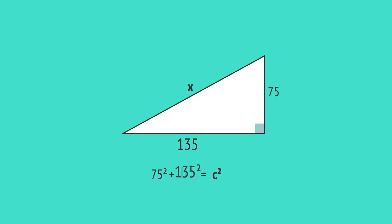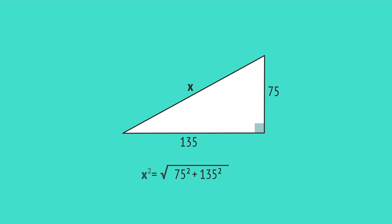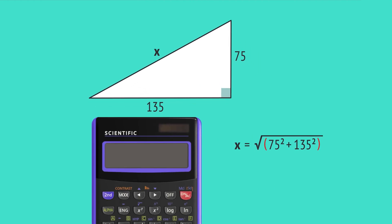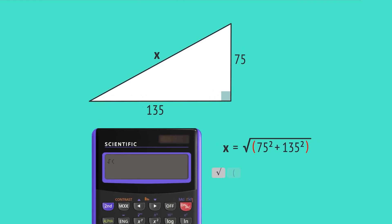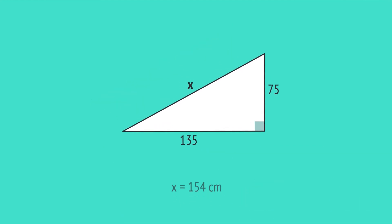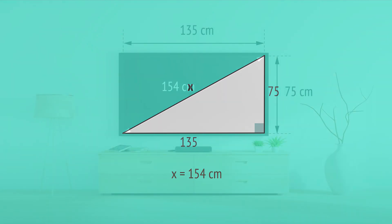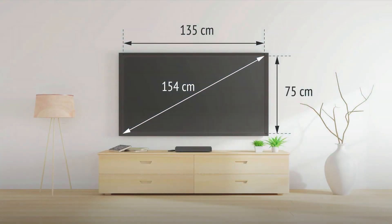Substitute the values into the formula, then take the square root to give the calculation for x. Enter this into a calculator, making sure to use brackets under the square root. This gives an answer of 154 when rounded to the nearest centimetre, and now we have the diagonal length of the TV screen.